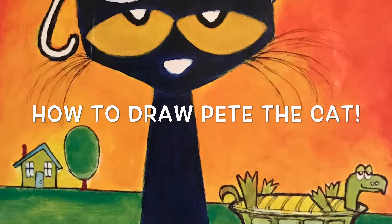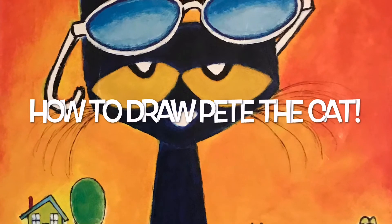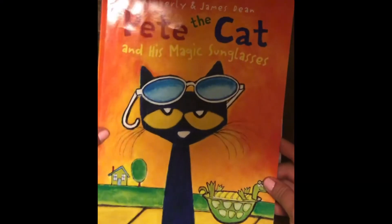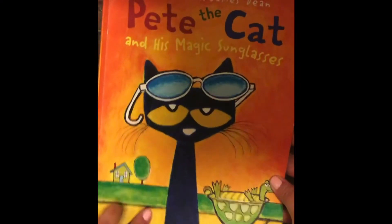Okay boys and girls, today we're going to learn how to draw Pete the Cat from Pete the Cat and His Magic Sunglasses. We're going to start out with our paper not in landscape mode which is horizontal, but vertical like it is in this book here, which is portrait mode, because this is a portrait of Pete the Cat.